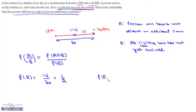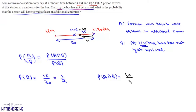Now we will find P(A intersection B). It is given that at 1:15 the bus has not yet arrived and the person will have to wait at least an additional 5 minutes. So that means it corresponds to the case where the bus arrives after 1:20. If the bus arrives after 1:20, this person has to wait at least an additional 5 minutes. In this case, the favorable interval corresponds to a length of 10. So this probability will be simply 10 by 30, which is 1 by 3.